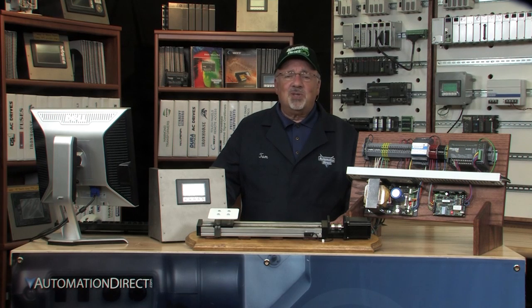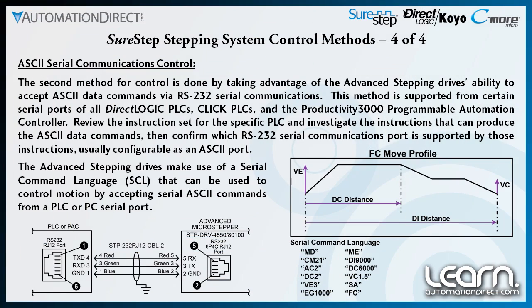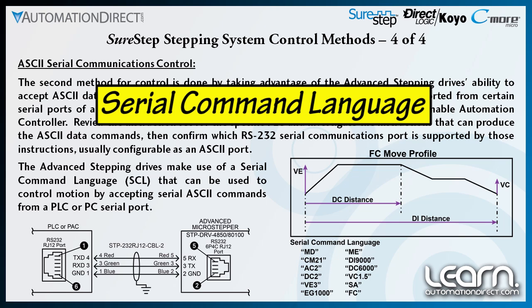The second method for control is accomplished by taking advantage of the Advanced Stepping Drive's ability to accept ASCII data commands using RS232 Serial Communications. The ASCII Serial Communications method is supported from certain serial ports using any DirectLogic PLC, CLICK PLC, or the Productivity 3000 programmable automation controller. Check the instruction set for the specific PLC being used and confirm which RS232 Serial Communications port is supported. The Advanced Stepping Drives make use of a Serial Command Language, abbreviated SCL, which is used to program motion profiles accepted as Serial ASCII commands from a PLC or PC serial port.